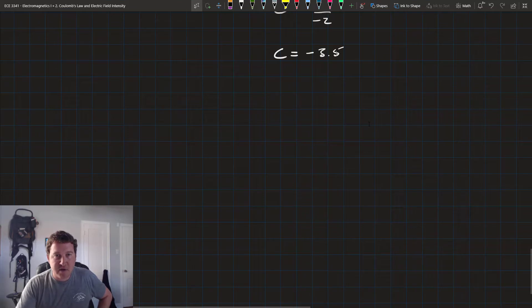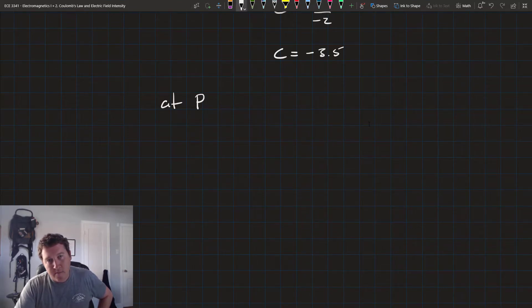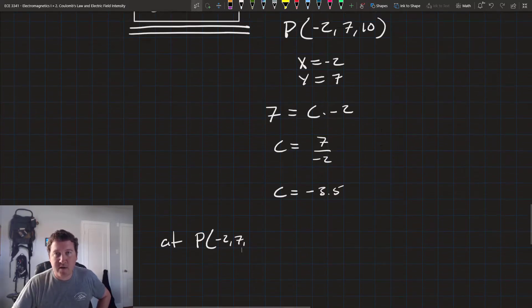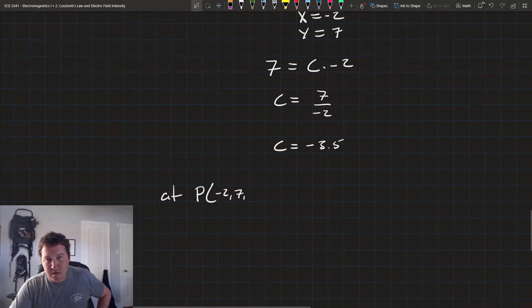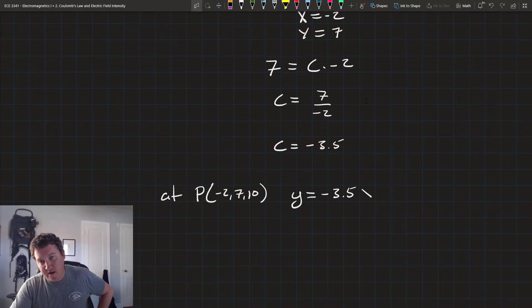So, our exact solution is, we'll say, at point negative 2, 7, 10, we have that it's y equals negative 3.5x.